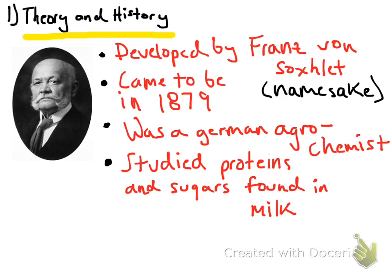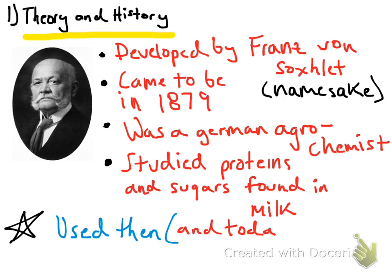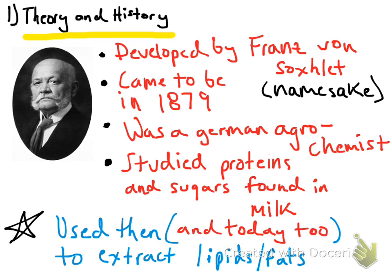He had also proposed the pasteurization process — although it wasn't known by that name until later — and he thought it would be best to heat treat milk to get rid of bacteria as well. The Soxhlet was brought about and it's still used today to extract lipids from a solid sample. Primarily that's a biological sample, but it's not limited to biological samples — it can also be an inorganic material with components selectively soluble in the Soxhlet solvent.